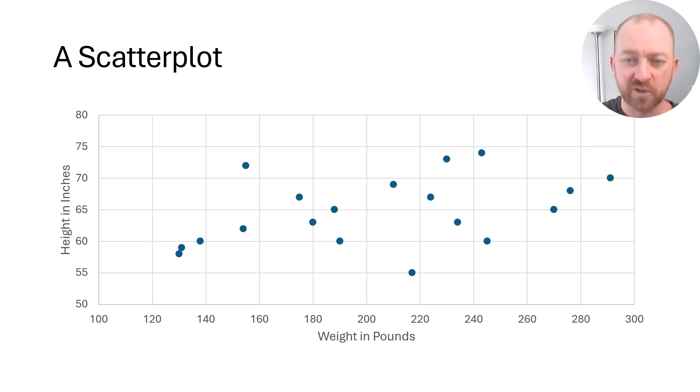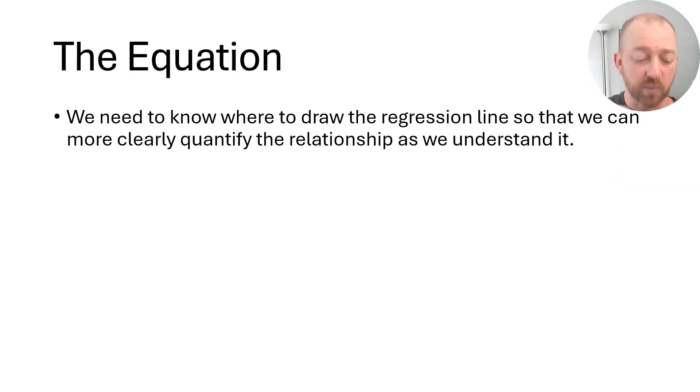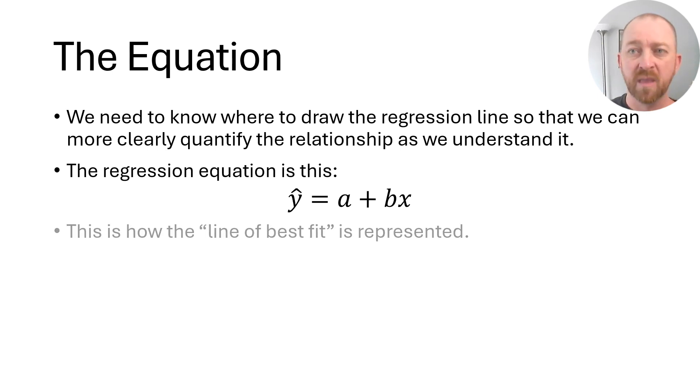Let's take a look at the equation so we can start to understand how to actually calculate things. What we want to do is more clearly give a precise estimate for one of the variables if we know the value of the other variable. This is the equation: Y with a little hat equals A plus BX. So far, we don't really know what any of these mean except X. This is the equation for a line in a two-dimensional plane, like on a scatter plot. That may sound familiar because you probably used equations like that.